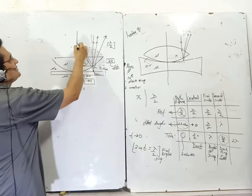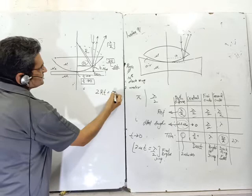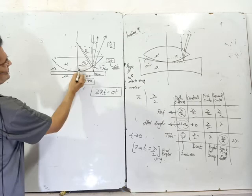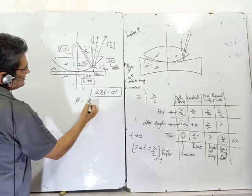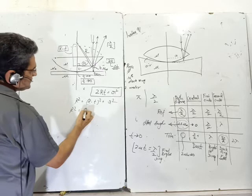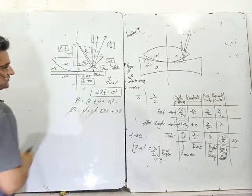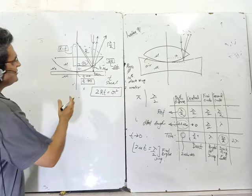Now, r is the radius of the ring and R is the radius of curvature of the surface — don't confuse the two. t is the film thickness. The key geometric formula is: 2Rt = r². Memorize this. Derivation: by Pythagoras, R² = (R−t)² + r², giving R² = R² + t² − 2Rt + r². Since t is very small, t² ≈ 0, so 2Rt = r².